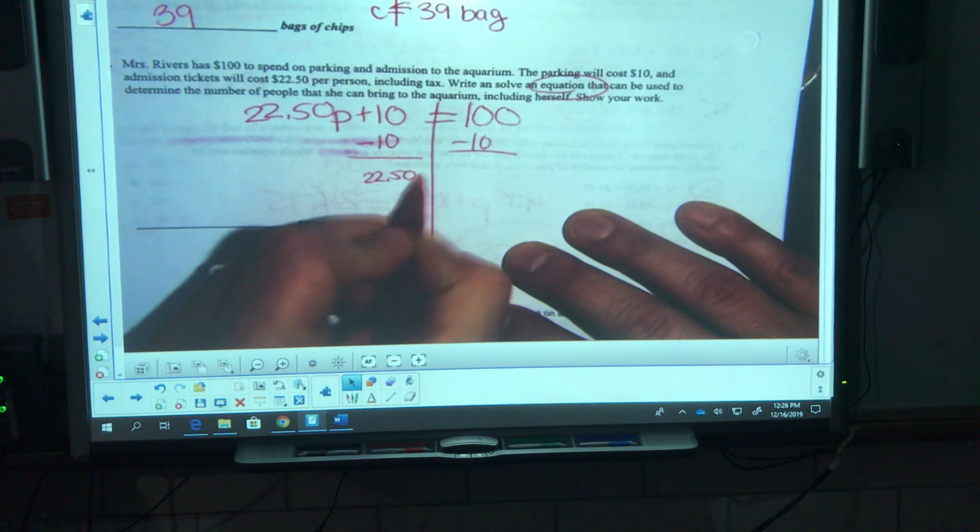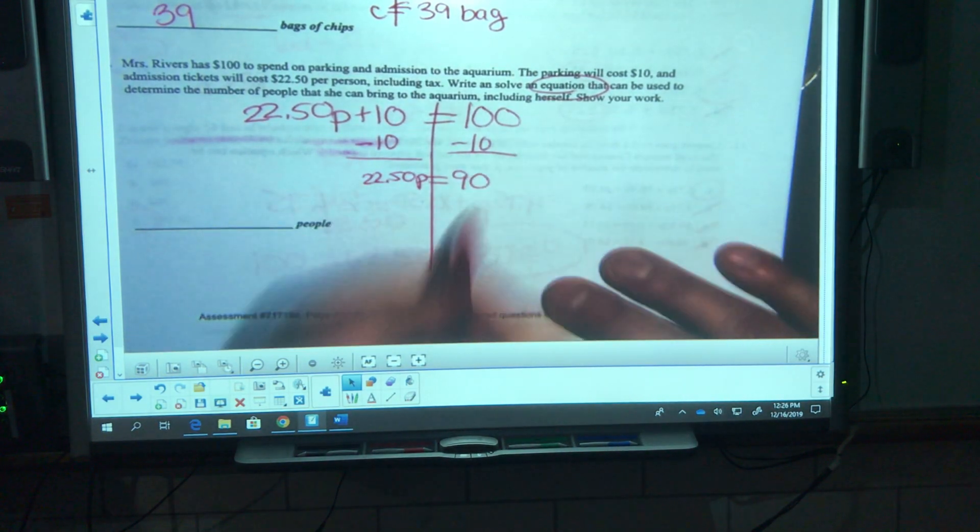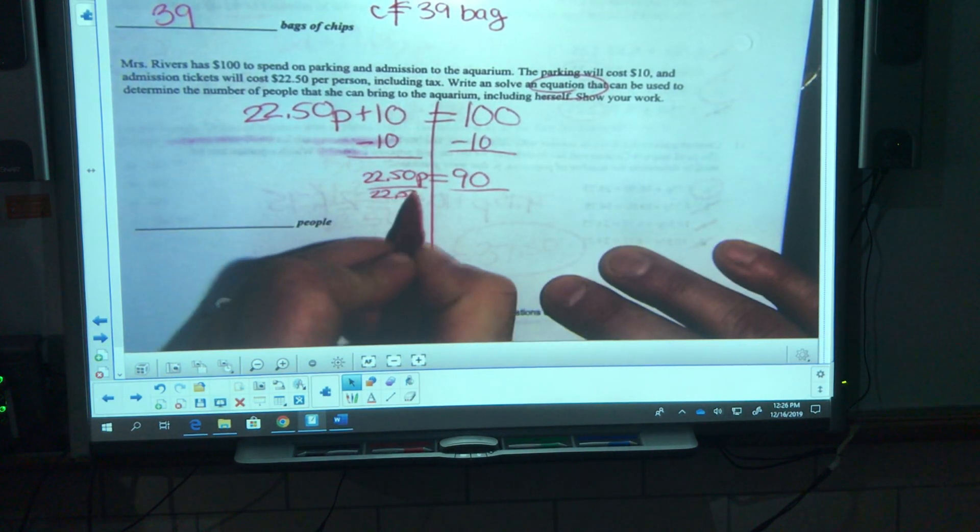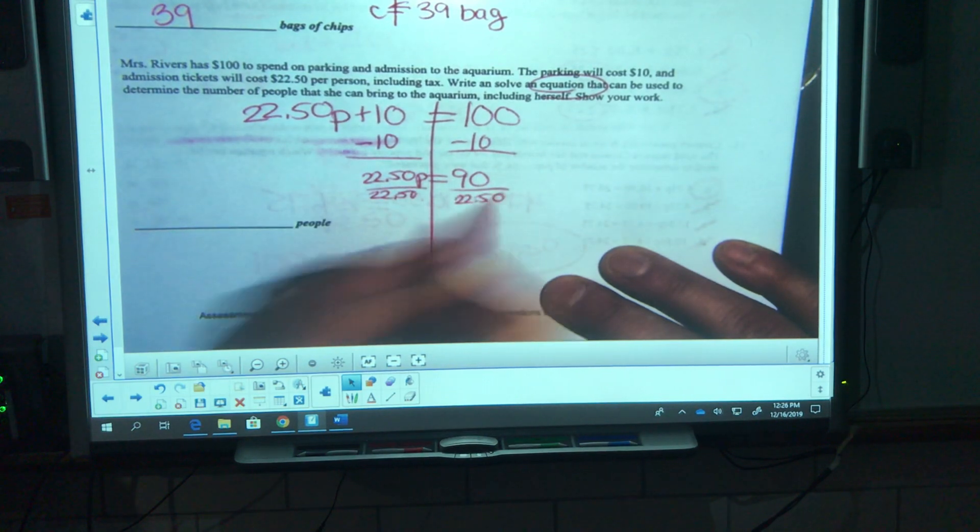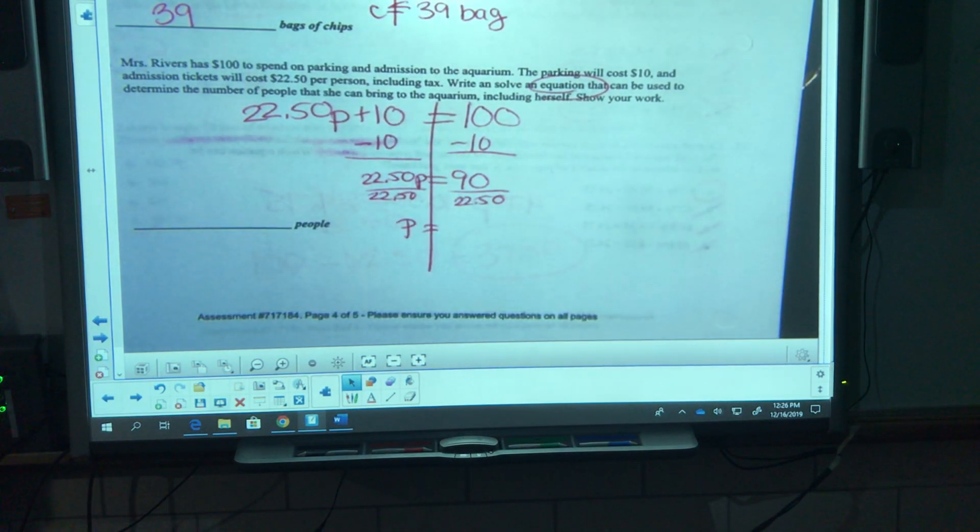Let's solve. Minus 10 on both sides. 22.50p is equal to 90, divided by 22.50. 90 divided by 22.50 is four. She can bring four people. Actually, four people can be in her group, she's got to include herself. Four people including herself.